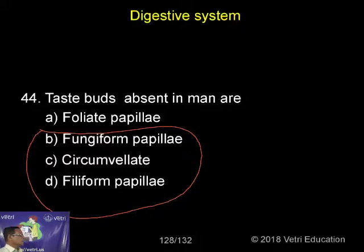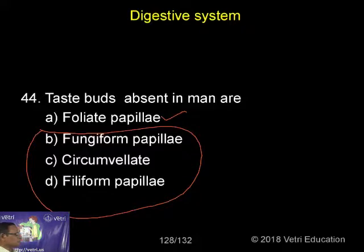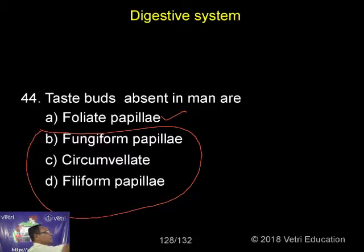The type of papillae found absent in man is the foliate papillae, but it is present in the case of rabbit. So one type is missing in the case of man — that is the foliate papillae — but it is present in the case of rabbit.